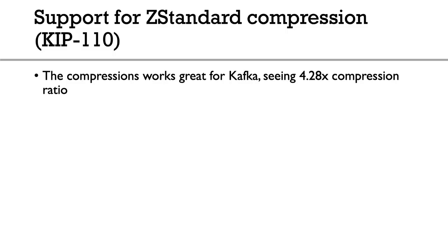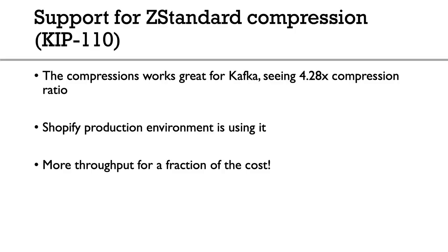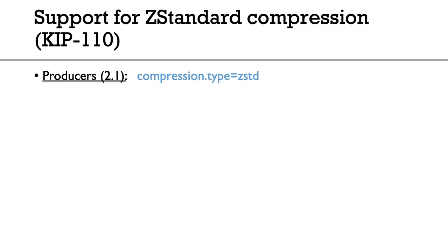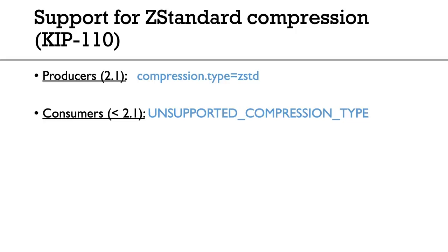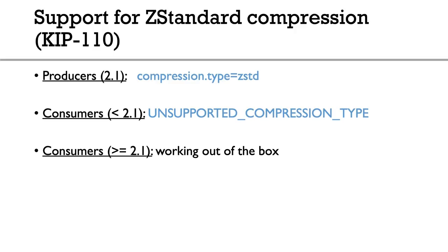According to the KIP we're seeing a 4.28x compression ratio improvement. Shopify, a Kafka user, is already using it in production and seeing a massive decrease in CPU usage — meaning more throughput at a fraction of the cost. To use it, set `compression.type=zstd` on the producer. Note that older consumers will get an unsupported compression type error. Also, you must upgrade consumers first, then the broker, then producers to use this new algorithm.